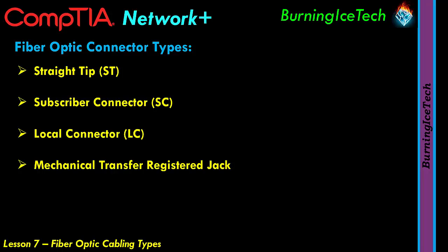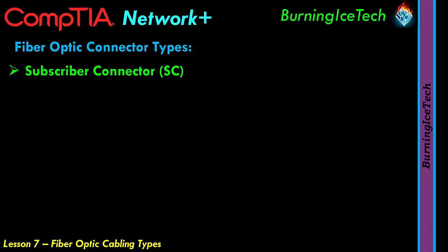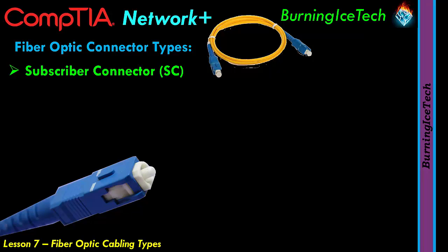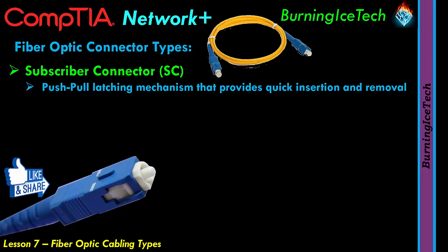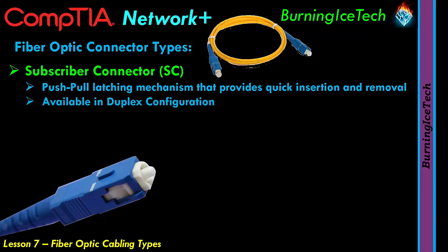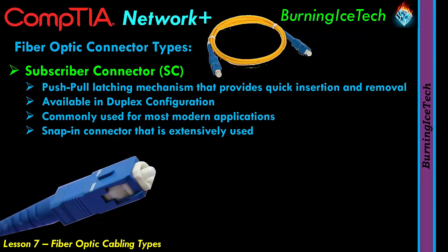The second connector on the list is the subscriber connector, or SC. It is a fiber optic connector with a push-pull latching mechanism that provides quick insertion and removal while also ensuring a positive connection. The subscriber connector is also available in duplex configuration, with keyed duplex capability to support both sent and received channels. It is commonly used for most modern network applications, and is a snap-in connector extensively used in single-mode systems. It is also very inexpensive, trouble-free, and very robust. It gives precise positioning via ceramic ferrules, with a simple push-pull motion, and it's keyed.